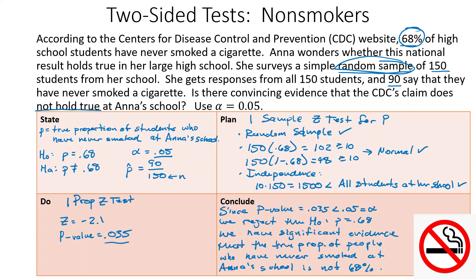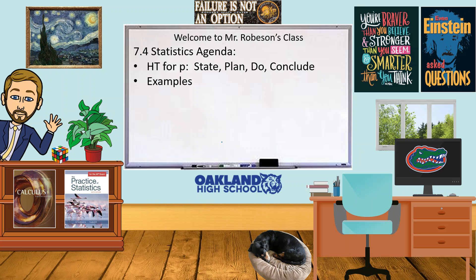And that's it — those are our two examples. This is how we do our hypothesis test for proportions. Hopefully that helped, and I'll see you next time.